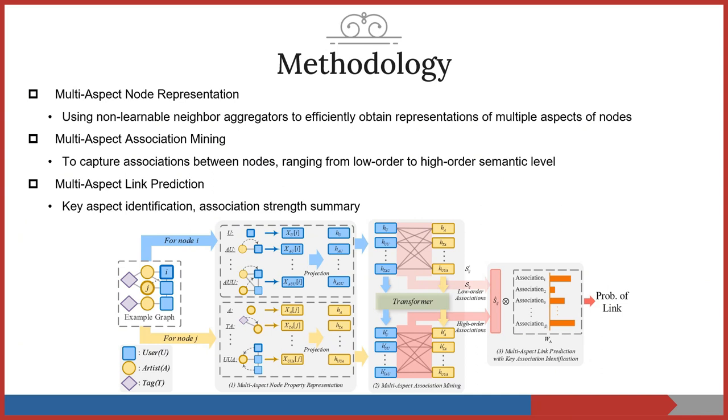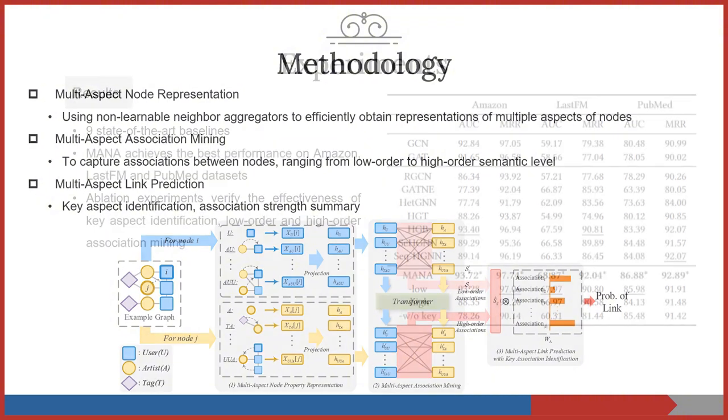The first module learns representations of multiple aspects of nodes. The multi-aspect association mining module captures associations between nodes ranging from low-order to high-order semantic level. Finally, by identifying key aspect associations and summarizing the strengths of associations, the multi-aspect link prediction module provides the results of link prediction.